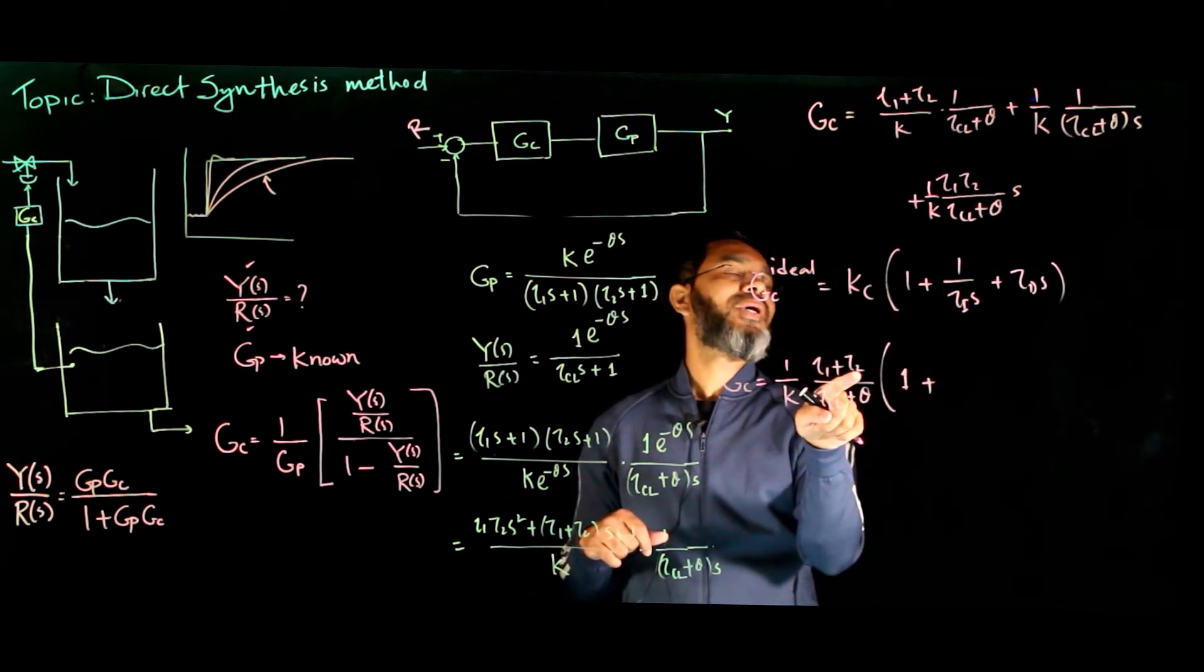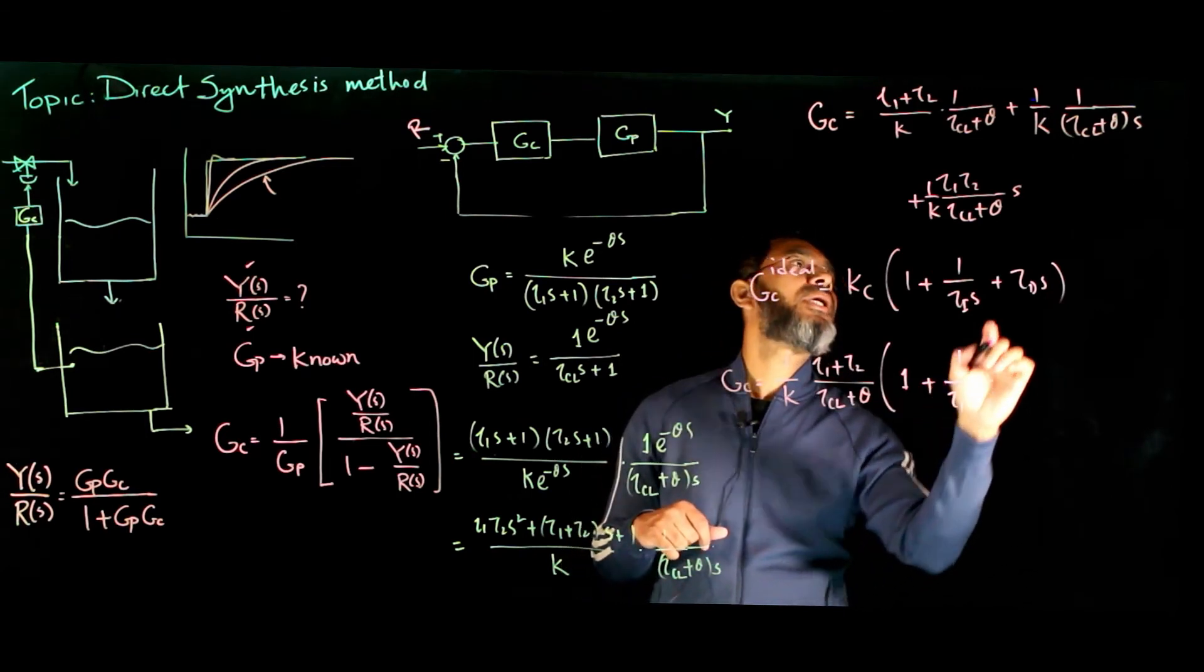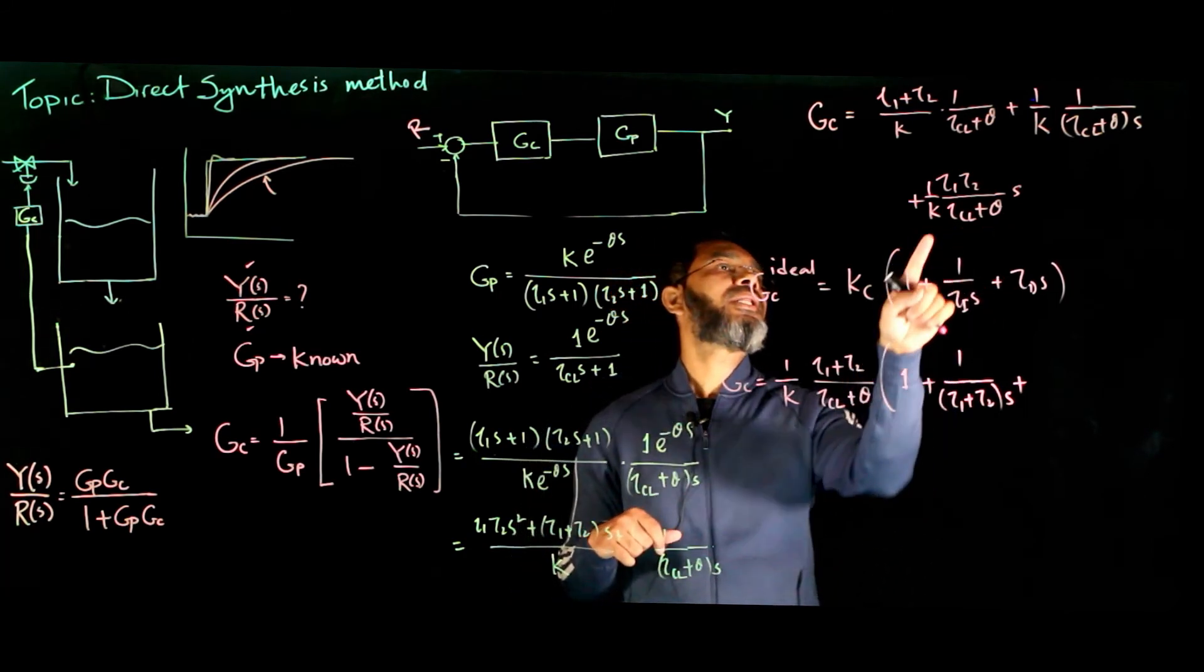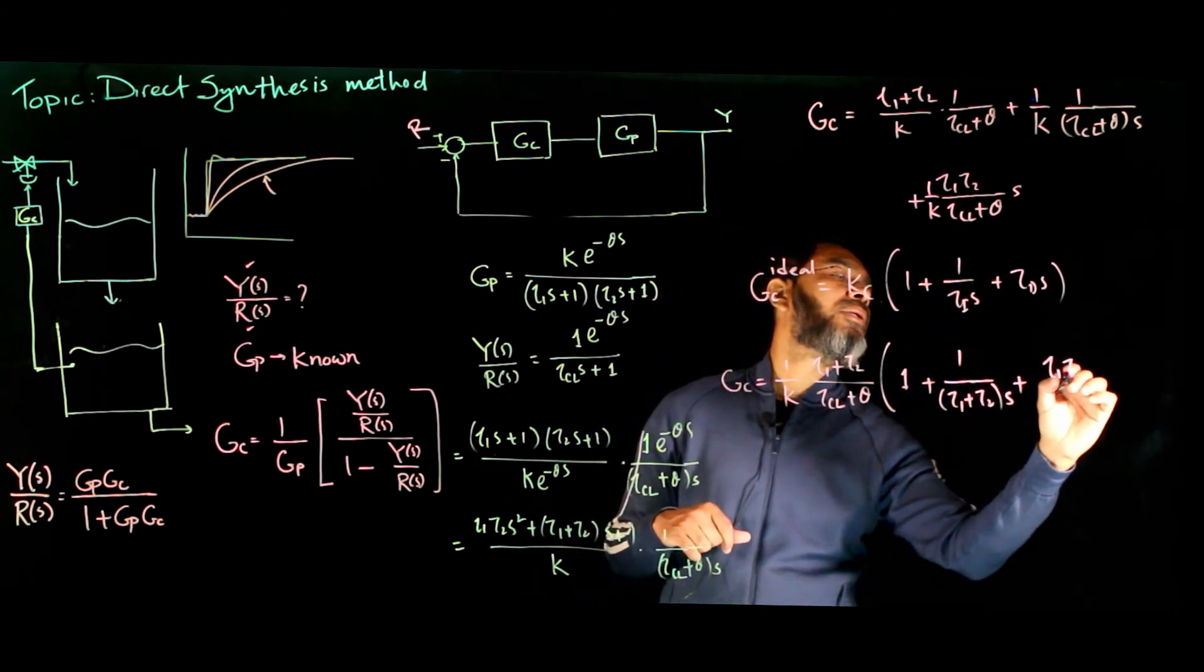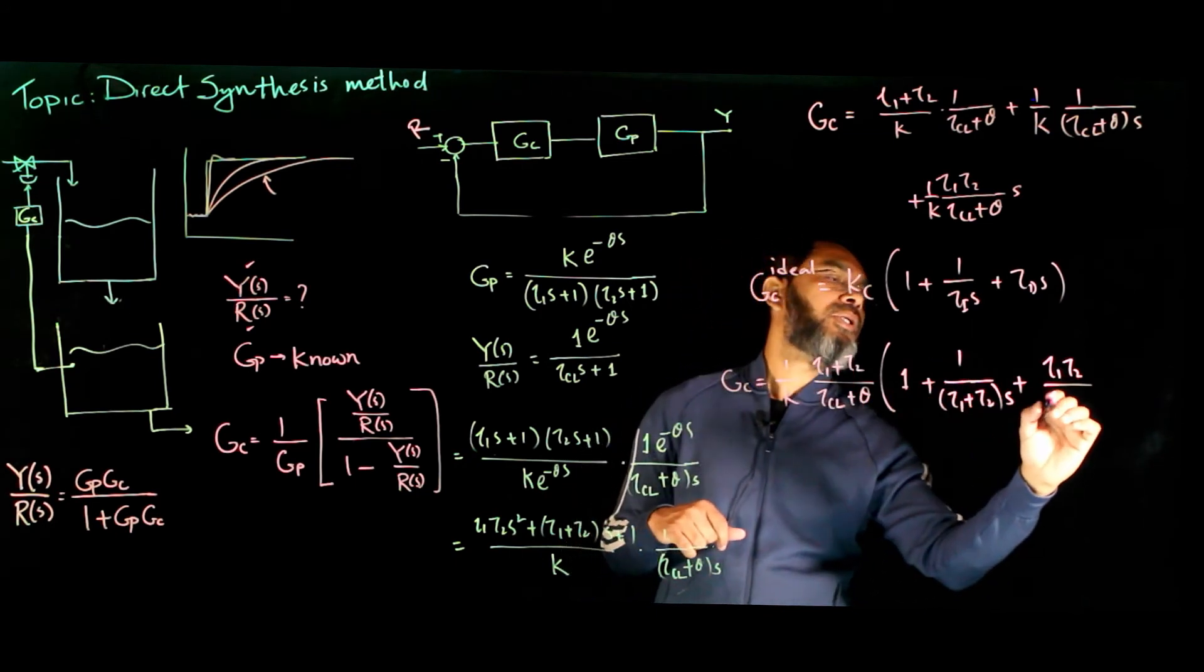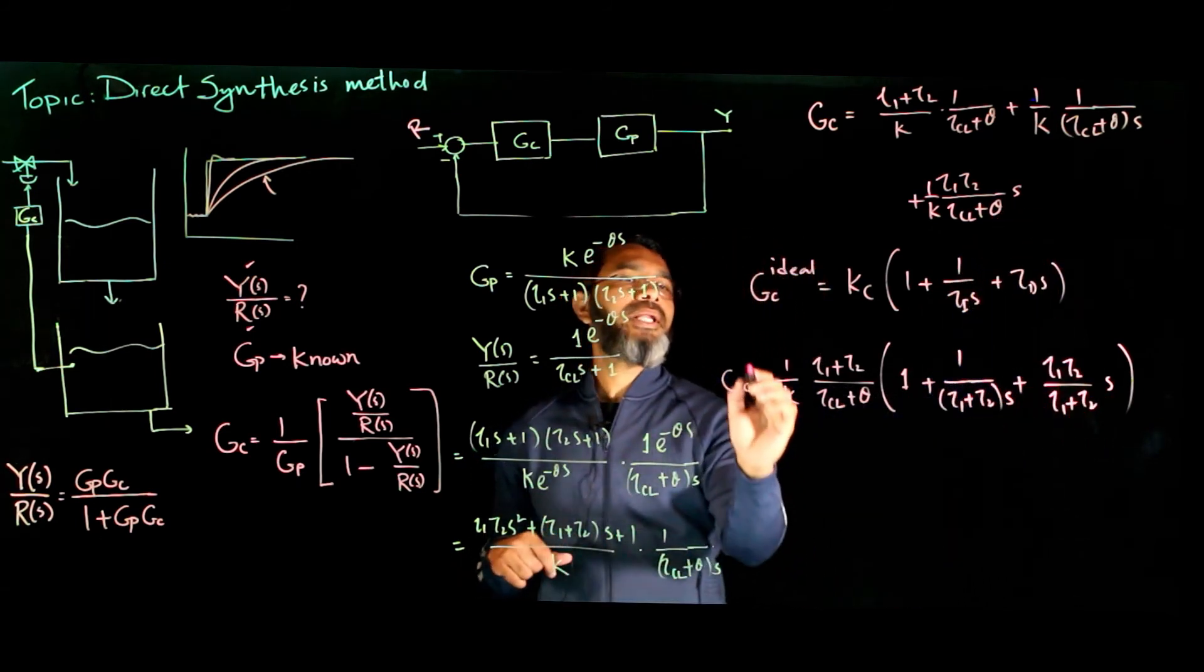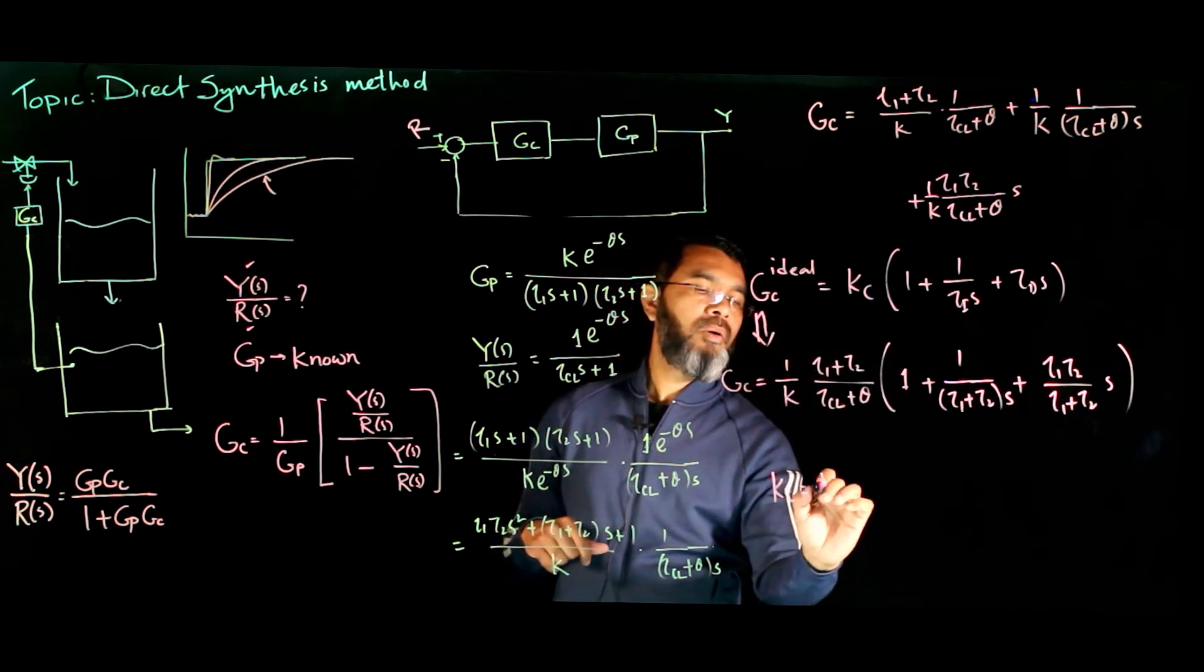So if I write it in that way for this expression, Gc becomes: I'll take the entire thing out, so 1 over k times tau 1 plus tau 2 over tau cl plus theta. So this becomes 1 plus - we have this tau cl plus theta there and we have the k there. What's extra here is tau 1 plus tau 2 at the numerator, so we need to write tau 1 plus tau 2 at the denominator and the s term remains there.